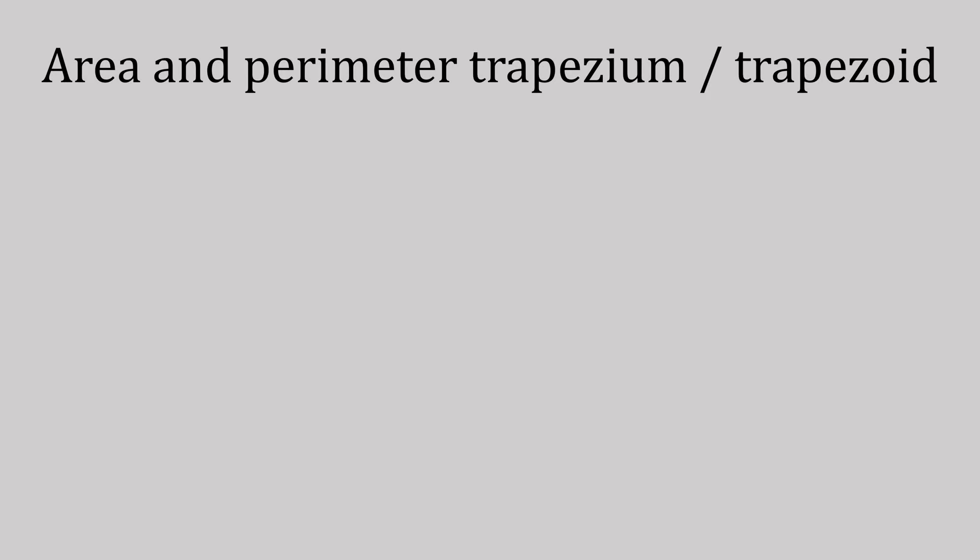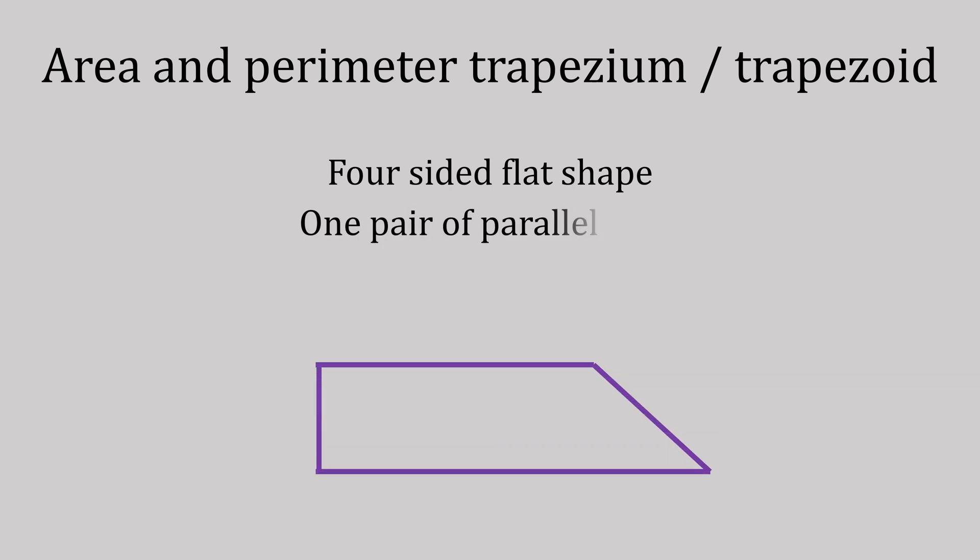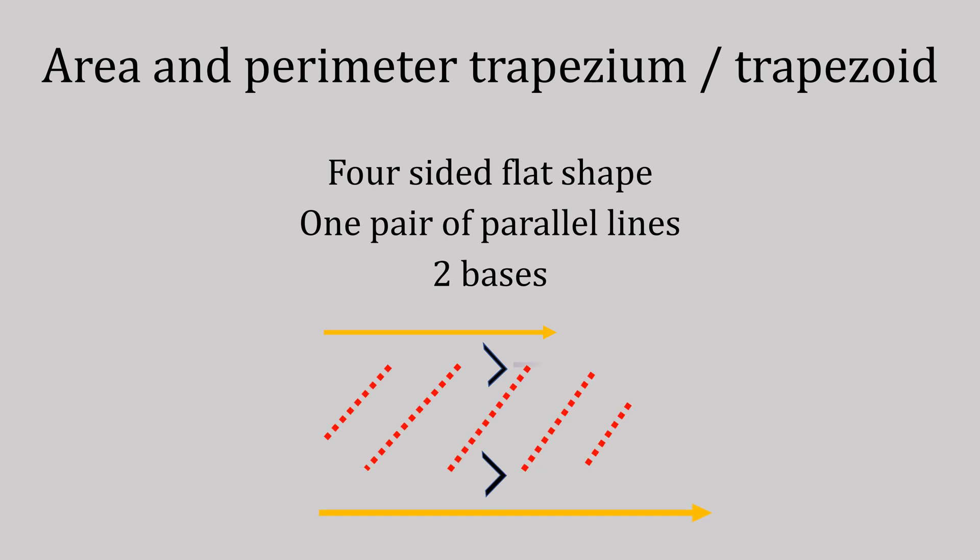Area and perimeter of a trapezium or trapezoid. This is a four-sided flat shape with one pair of parallel lines, which gives us two bases. The area is all the space inside the shape, and the perimeter is the outside line, like a perimeter fence.